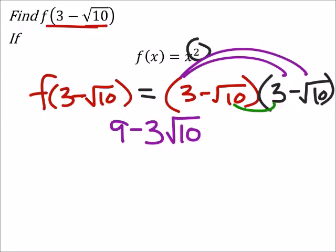Now I'll distribute this negative square root of 10—multiply, distribute is the word I was looking for. This is minus 3 times the square root of 10.